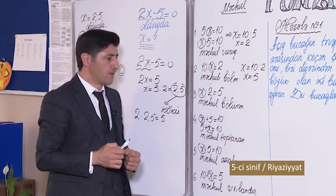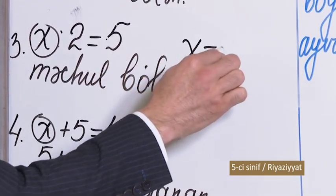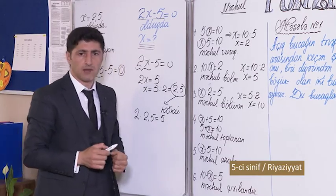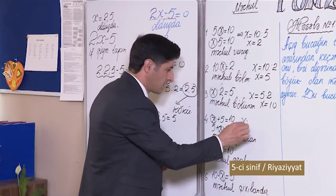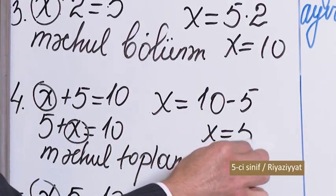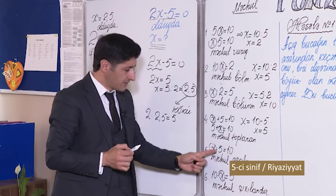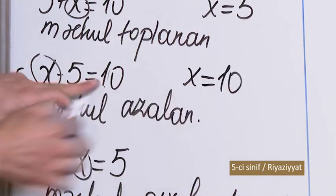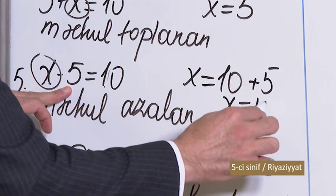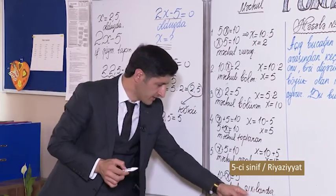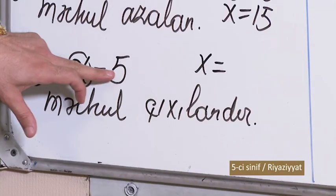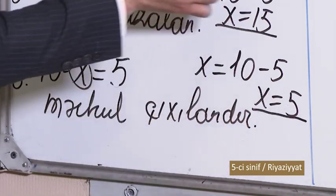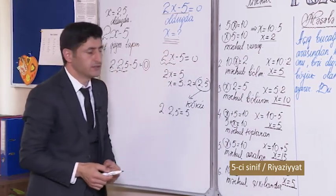Məchul bölünəni tapmaq üçün qisməti bölənə vurmaq lazımdır: x = 5 × 2 = 10. On bu tənliyin köküdür. Məchul toplananı tapmaq üçün cəmdən digər toplananı çıxmaq lazımdır: x = 10 − 5 = 5. Məchul azalanı tapmaq üçün fərqin üzərinə çıxılanı gəlmək lazımdır: x = 10 + 5 = 15. Məchul çıxılanı tapmaq üçün azalandan fərqi çıxmaq lazımdır: x = 10 − 5 = 5. Bu ədədlər hər biri uyğun tənliyin kökü sayılır.